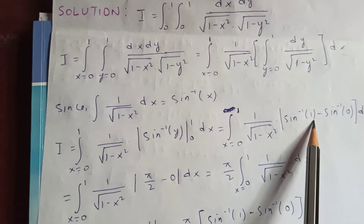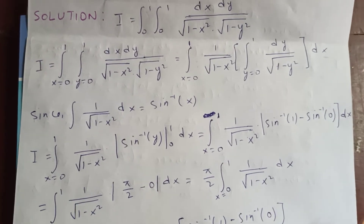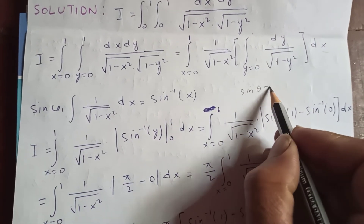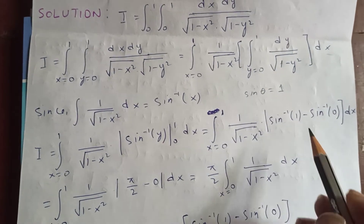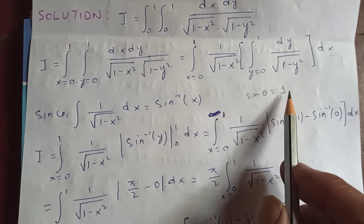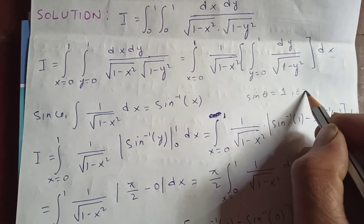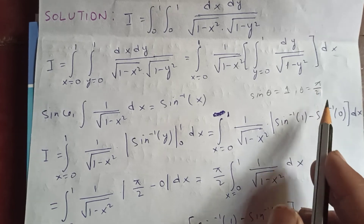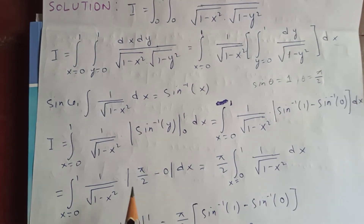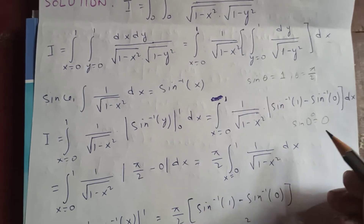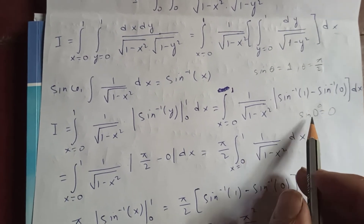Now apply using the fundamental theorem of integral calculus: sin inverse of 1 minus sin inverse of 0. What is sin inverse of 1? Sin inverse of 1 is pi by 2, because sin theta equals 1 when theta equals pi by 2 — sin 90 degrees is 1. And sin inverse of 0 is 0, because sin 0 is 0.